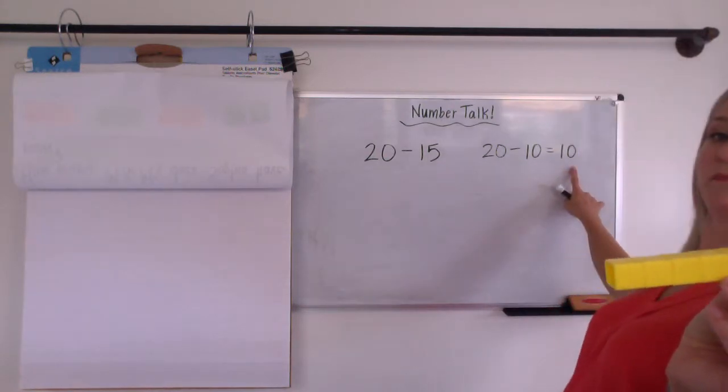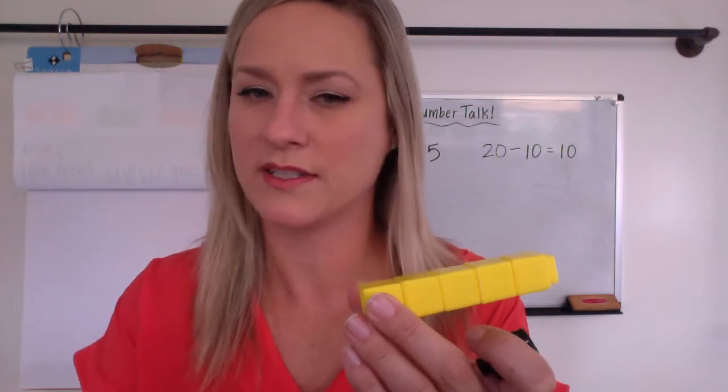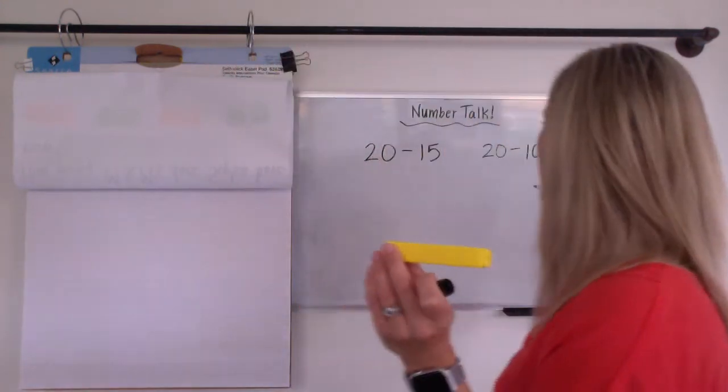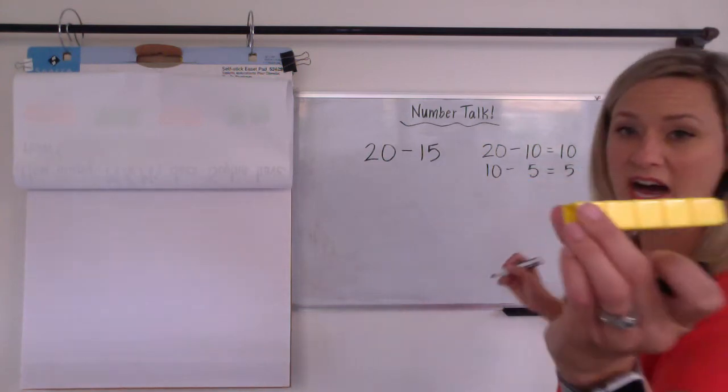So I had this. I took off that 10. I had 10 left, right? That's that. Whoop, that 10. And then I still had to take off the five more. So that would be the 10 minus the five more. And that equals five.